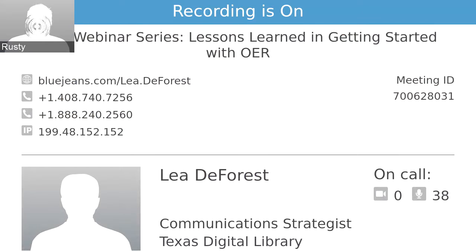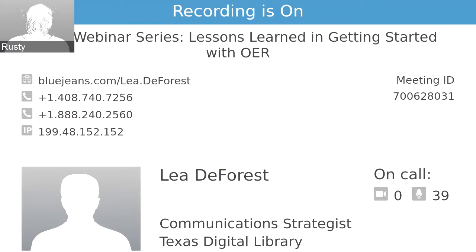Instead of a dedicated OER librarian, here at Texas A&M University Libraries we have a program called OACS, which stands for Open Access for Student Educational Success. It's basically a team of subject librarians led by a subject librarian, which is myself. This layout was originally envisioned by our scholarly communications director, Bruce Herbert. We promote and facilitate the adoption of open access textbooks, open educational resources, and existing library license materials as alternatives to expensive commercial textbooks on the Texas A&M campus.